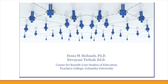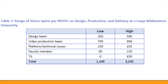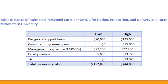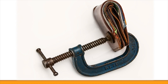According to research from Columbia University, an academic MOOC would cost $152,000 US on the low end and $244,000 on the high end to make. This number may not be a deterrent for a heavily-funded, illustrious university, but for cash-strapped non-profit organizations, it's astronomical.